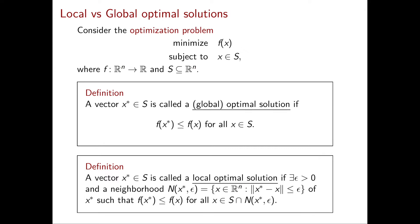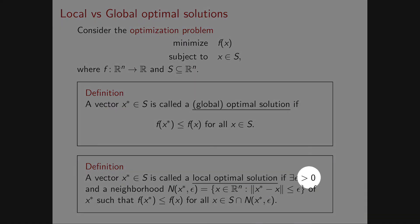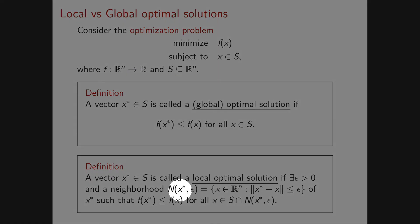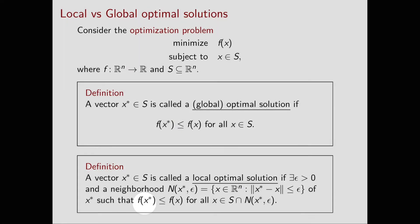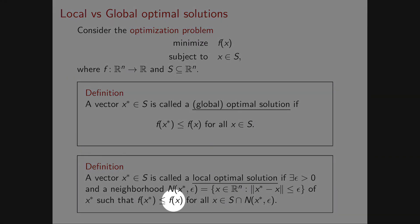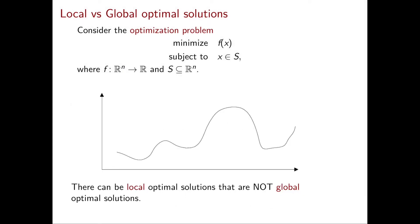More precisely, there exists an ε > 0 and a corresponding neighborhood N(x*, ε) — defined as the set of points in Rⁿ at distance at most ε from x* — such that the cost of x* is less than or equal to the cost of x for any x that is feasible and in N(x*, ε). In general, local and global optimality are different concepts.